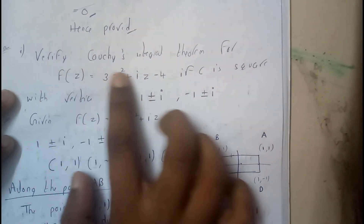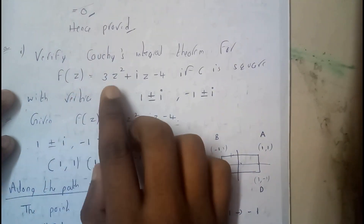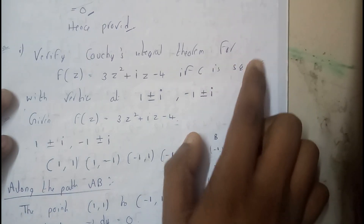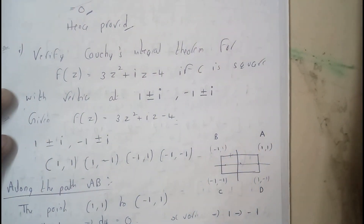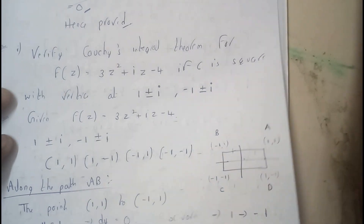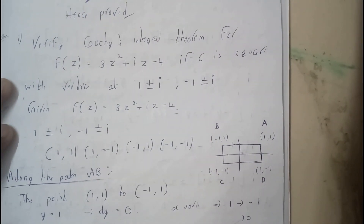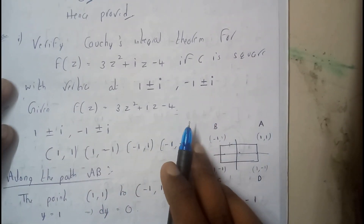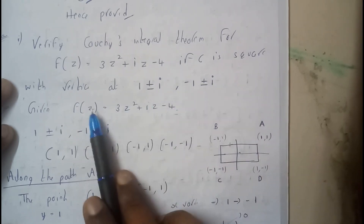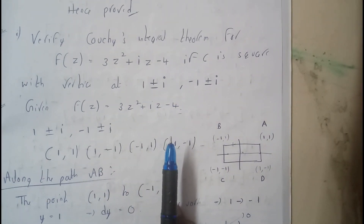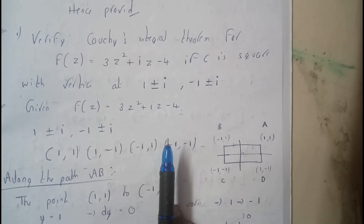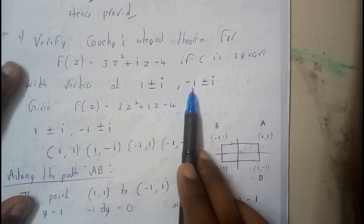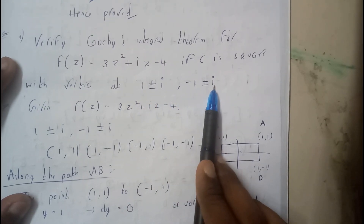Basically, the question is: verify Cauchy's integral theorem for f(z) = 3z² + iz − 4, where C is a square. Remember, the problem can give you a square, a triangle, or a pentagon — any kind of shape. Here the vertices are given as 1±i and −1±i.